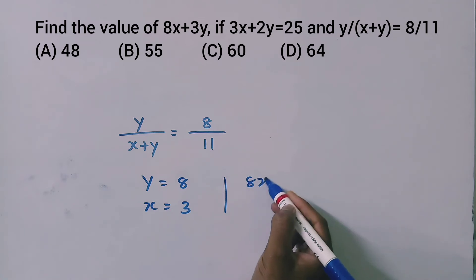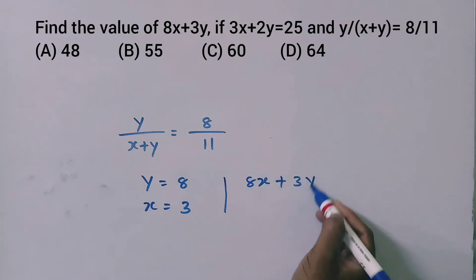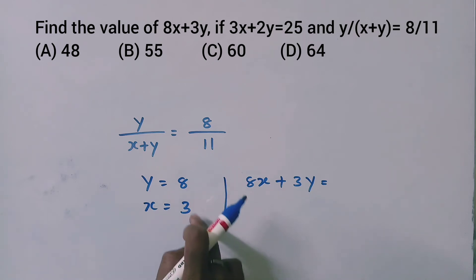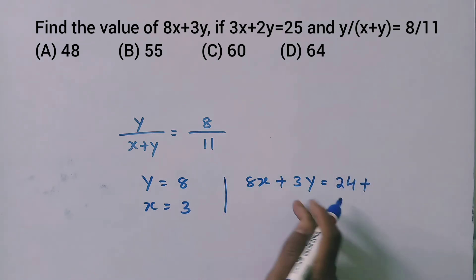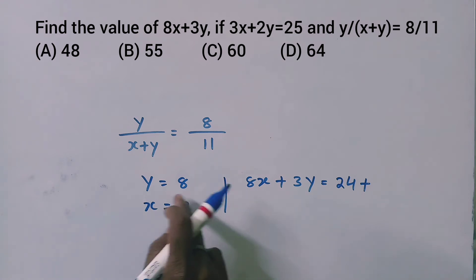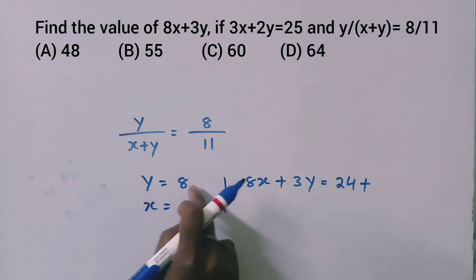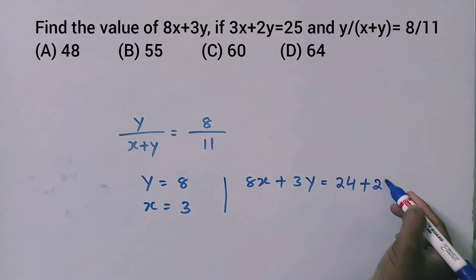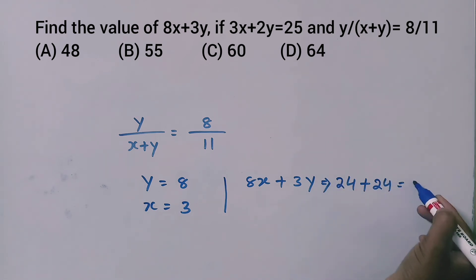Then, 8x plus 3y: the value of 8x is equal to 24, and 3y is equal to 24.